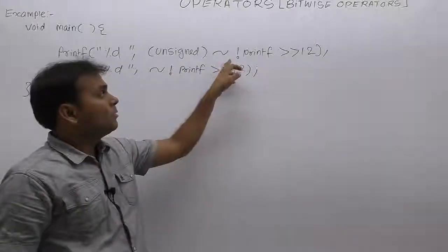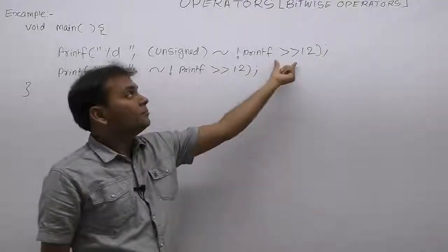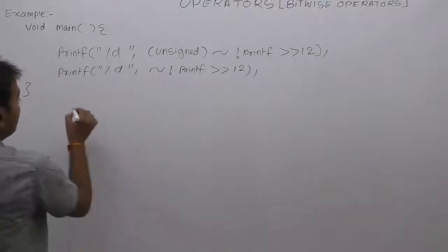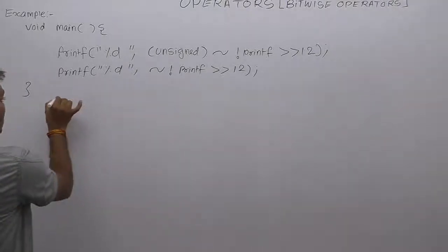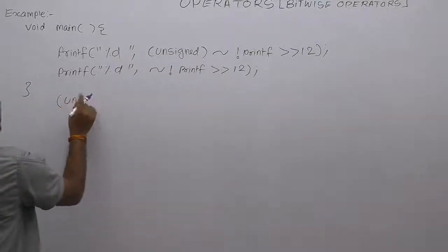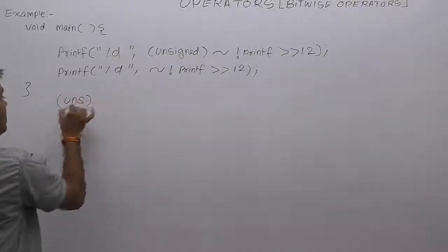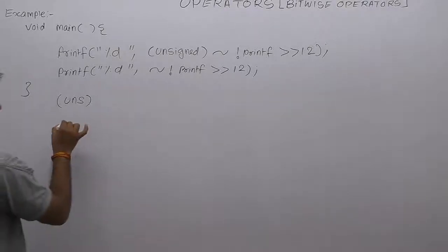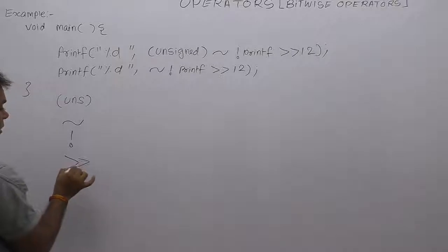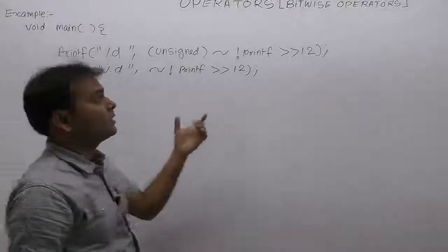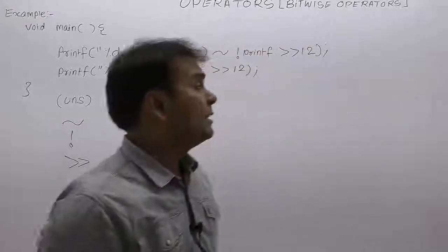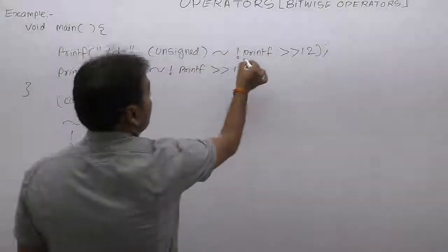Both ones complement and logical NOT are also unary operators. Right shift is a binary operator. So listing all available operators in the first expression: typecasting (into unsigned), ones complement, logical NOT, right shift. There are four operators total, and one new thing here is the print_tab function.